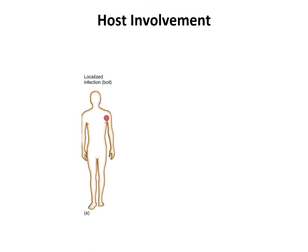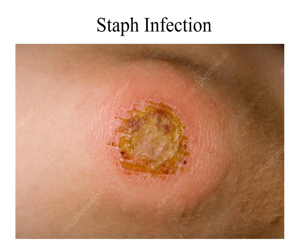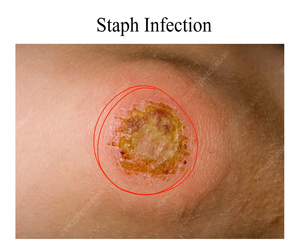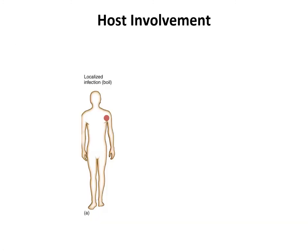The last set of terms covers host involvement — where the disease is affecting the host. The terms are local, systemic, and focal. A localized infection is where the microbe and the signs and symptoms are localized to one area of the body, usually where the microbe entered. An example is a staph infection where Staphylococcus epidermidis enters a break in the skin and causes a localized infection. The common cold is also a localized infection — it enters the respiratory system and the disease process remains localized to the upper respiratory system.